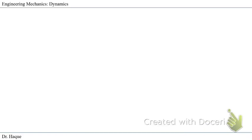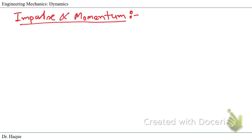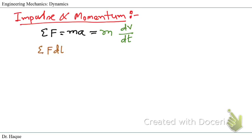Let's start with what impulse and momentum are. To arrive at the definitions, we begin with Newton's Second Law of Motion: the summation of forces equals mass times acceleration, and acceleration can be written as dv/dt. Rearranging, summation of F dt equals m dv. We can now take the integration of both sides.